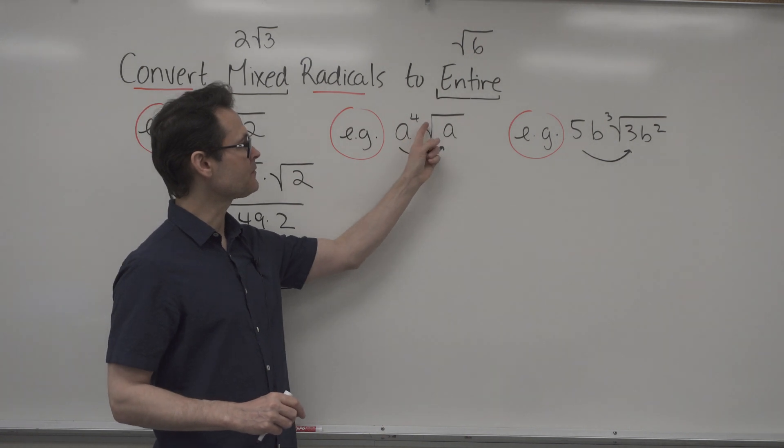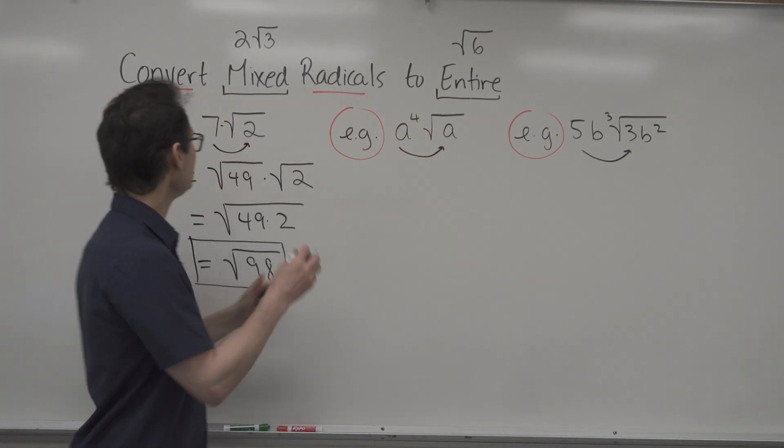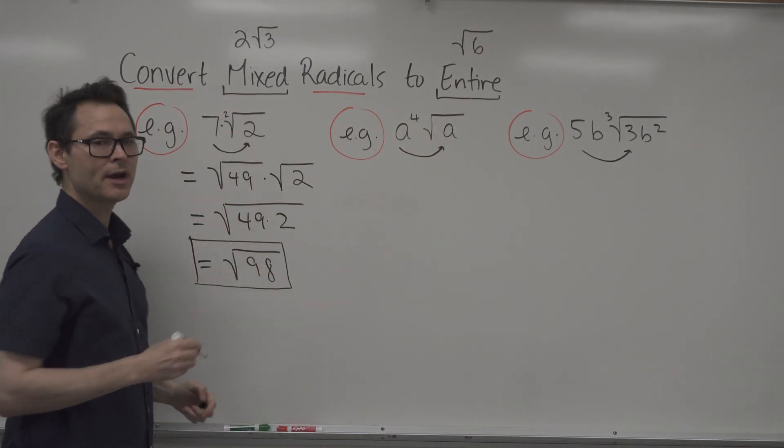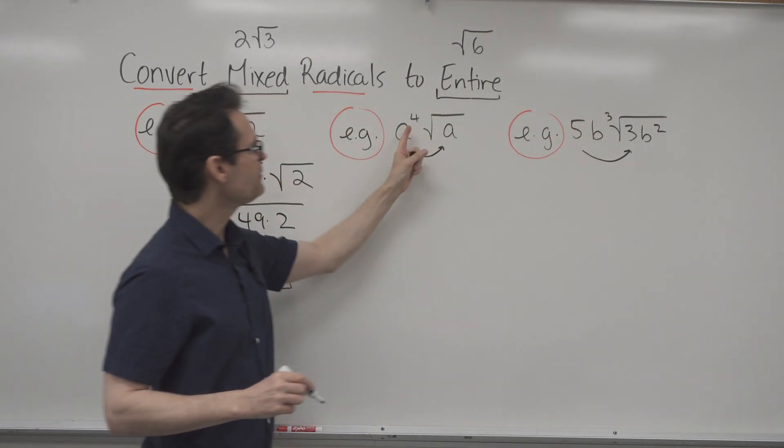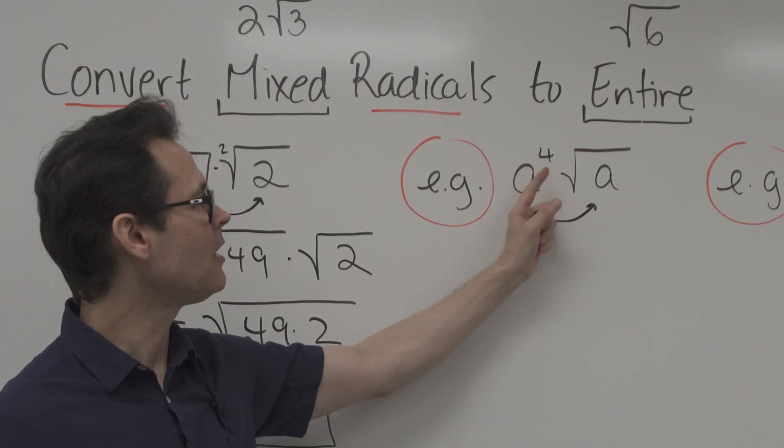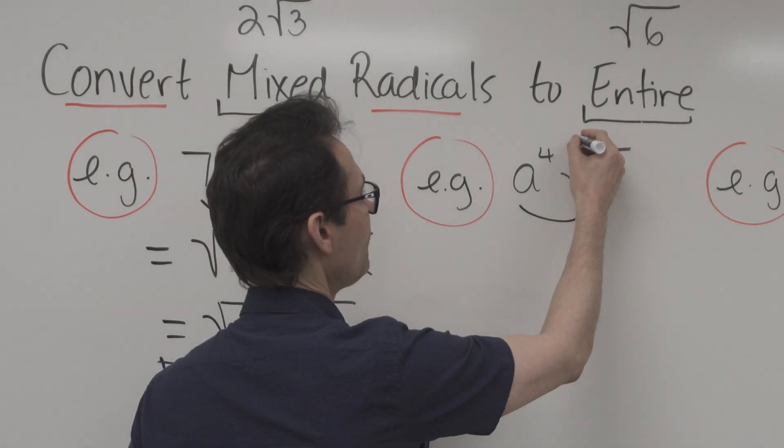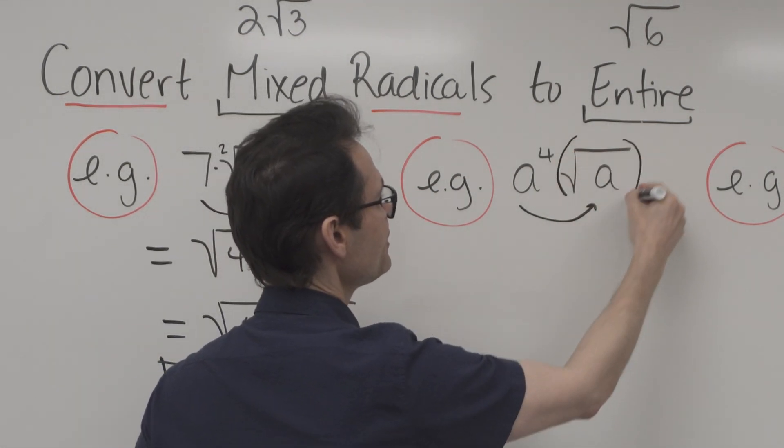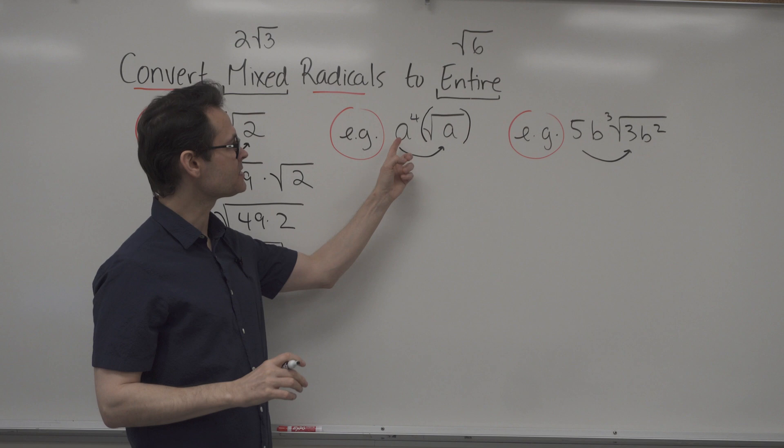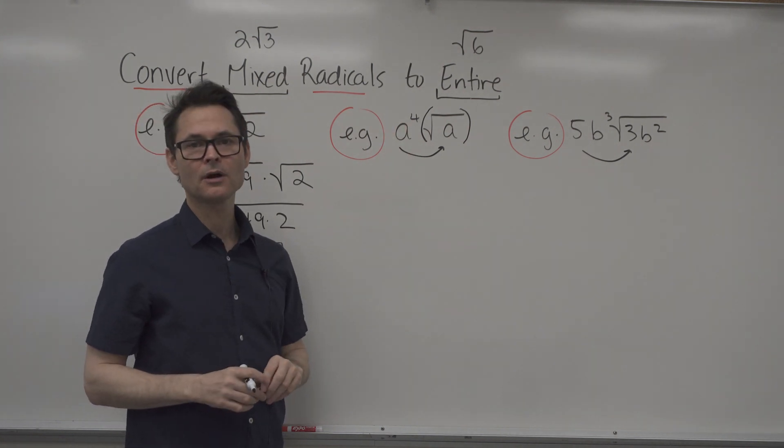Be careful, because there's a difference between the index. The index here was 2 for a square root. Notice the index here is 3. This here 4 is the exponent on A to the 4. So what I'm going to do is put brackets here, so that you can see that 4 is actually an exponent on the A.